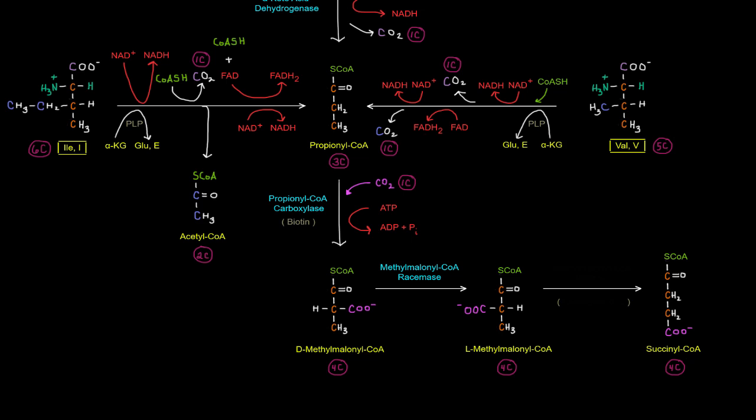Okay. And that L-methylmalonyl CoA is acted upon by methylmalonyl CoA mutase, which moves this carboxyl group from that carbon to this carbon to give, get that there, to make succinyl CoA.